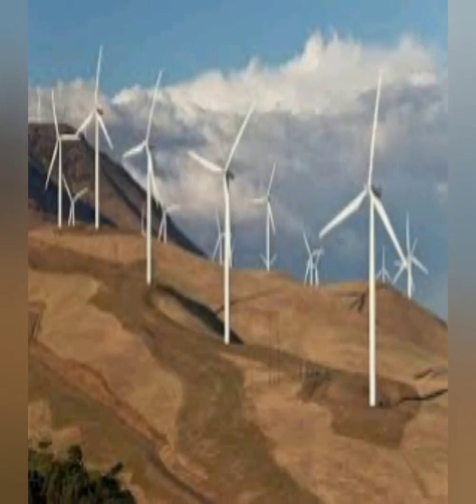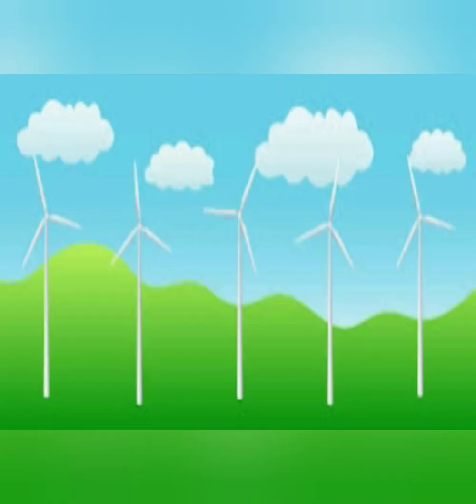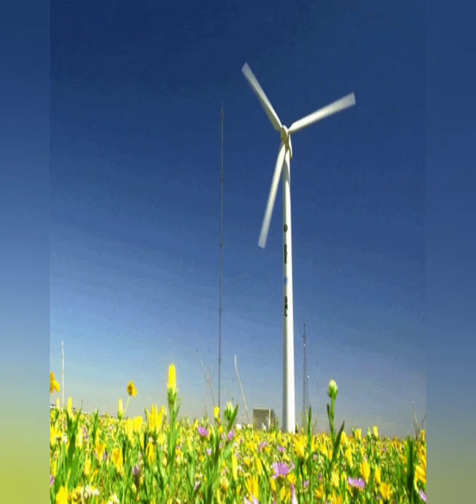Wind energy is used to produce electricity through windmills. It is also used for grinding of wheat. Wind energy is a renewable source of energy. Netherlands is known as the country of windmills — they have so many windmills that it is called the country of windmills.